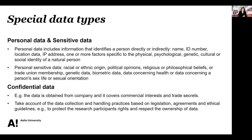Then we have personal sensitive data, which is personal data regarding racial or ethnic origin, political opinions, religious or philosophical beliefs, trade union membership, genetic or biometric data, data concerning health, or data concerning a person's sex life or sexual orientation. In addition to those, we have confidential data — for example, if you're working with a company where the data is obtained from that company and might cover commercial interests or trade secrets. When working with these types of data, take into consideration how you're going to protect the rights of research participants and respect the ownership of that data.